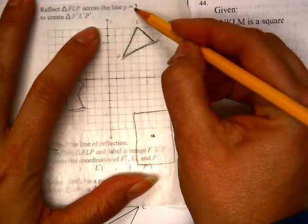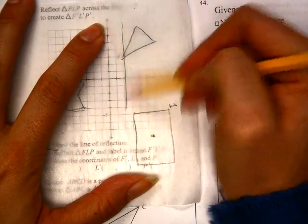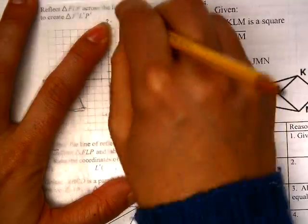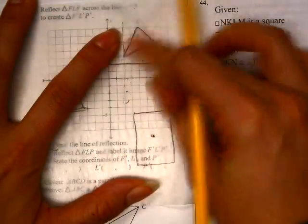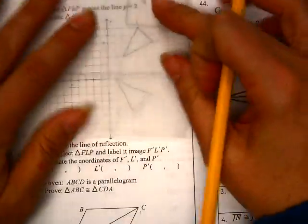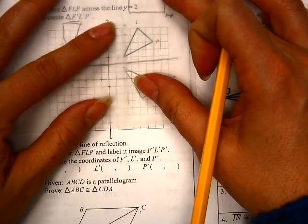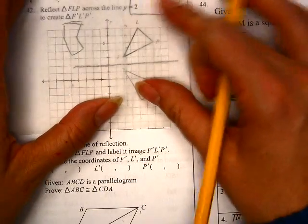Y equals 2. That's not y equals 2. That's x equals 2. Y equals 2. I'm going to reflect this across the line y equals 2. This is what I get.